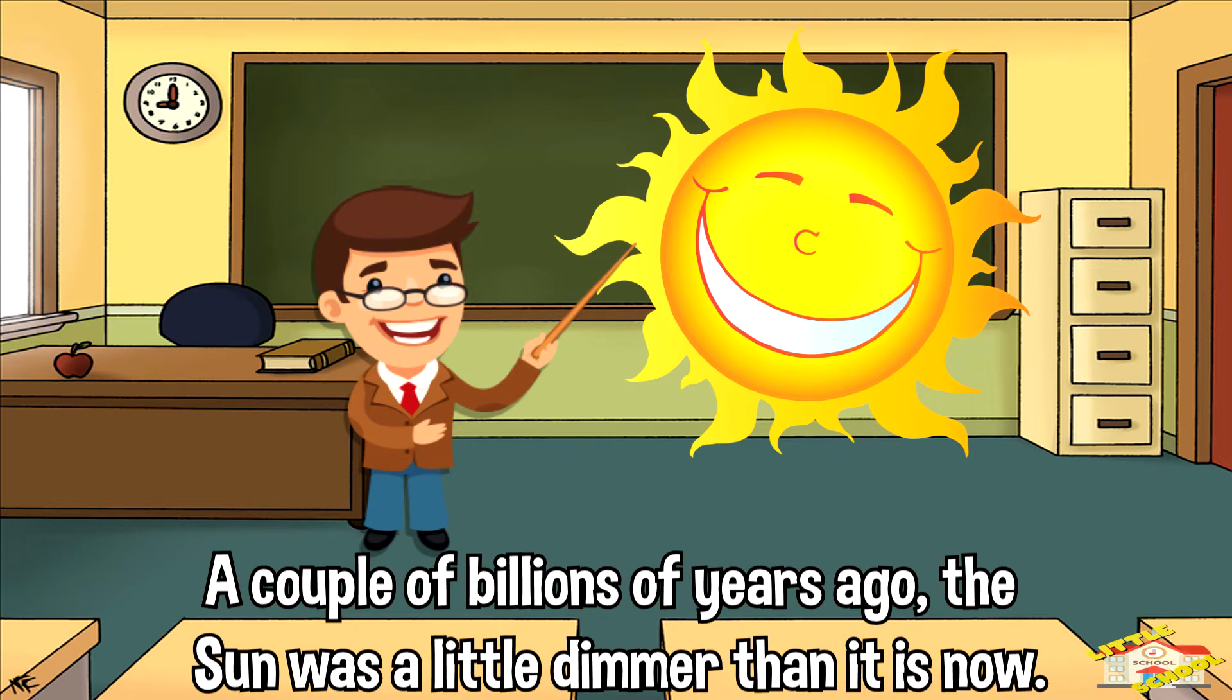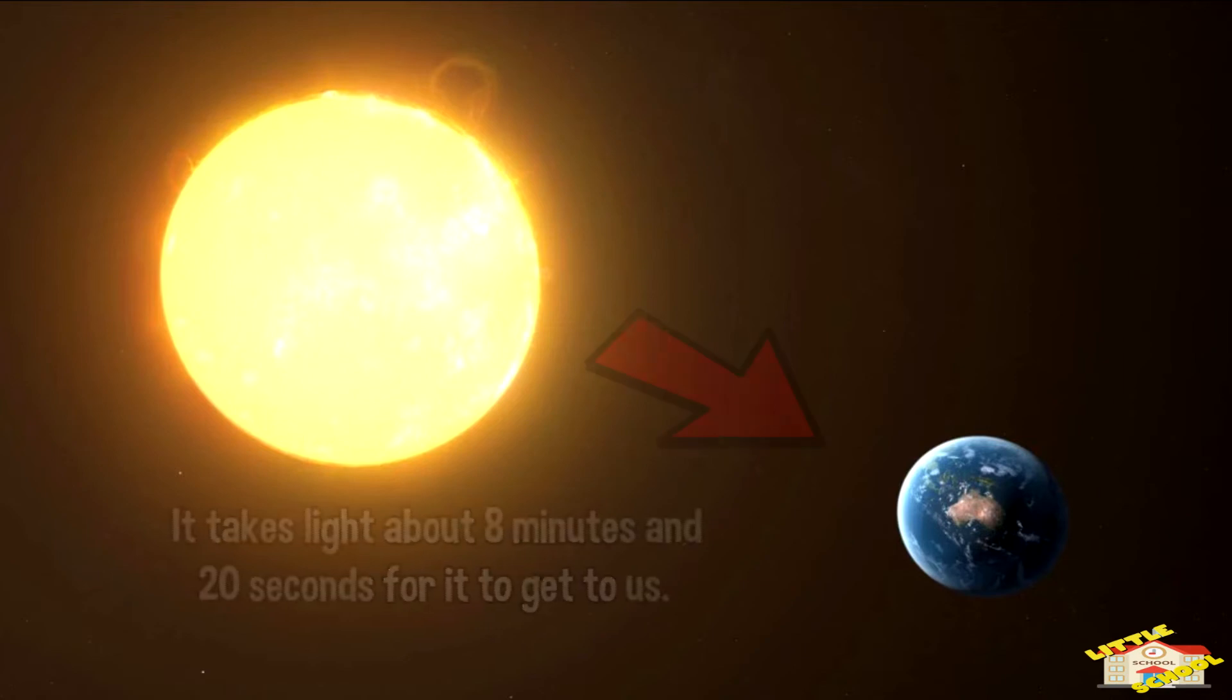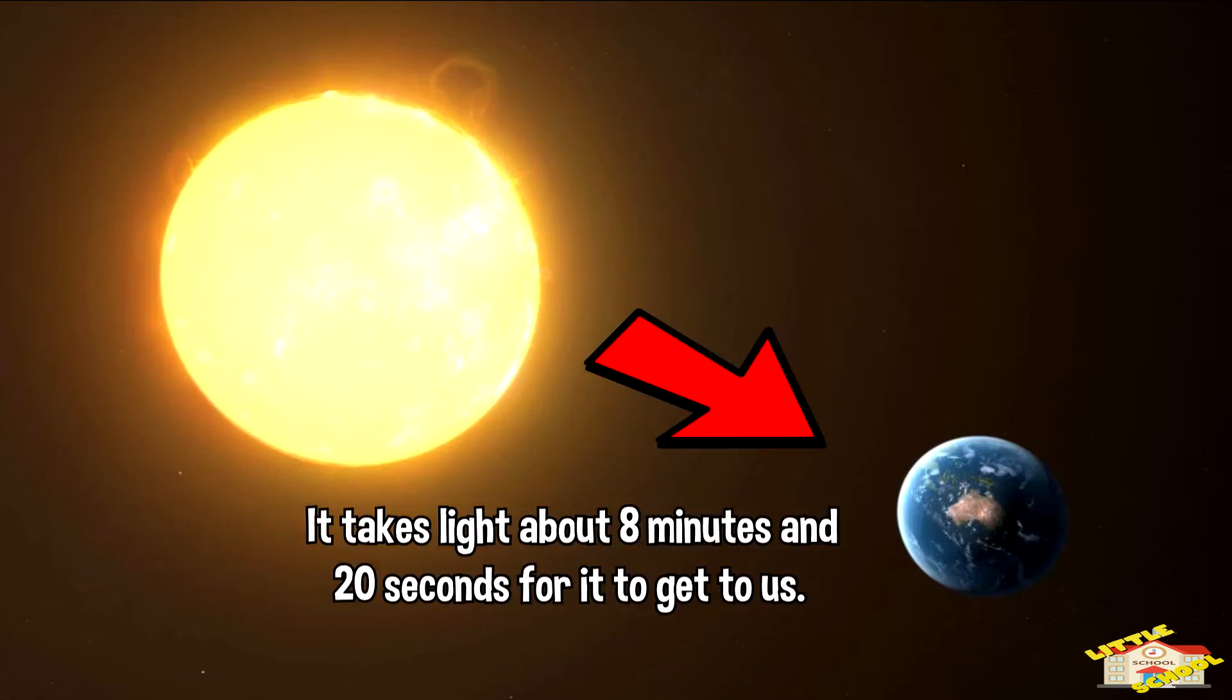The Sun has been getting slowly brighter since it was born a couple of billions of years ago. The Sun was a little dimmer than it is now. The Sun is so far away that it takes light about eight minutes and 20 seconds to get to us, and light is the fastest thing in the universe.